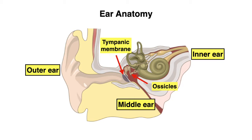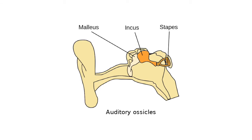Our inner ear actually has two main parts: the cochlea, which is responsible for our sense of hearing, and three semicircular canals that are responsible for our sense of balance. And just a fun fact — our smallest bone in the body is actually your stapes, which is one of your ossicles.